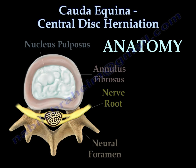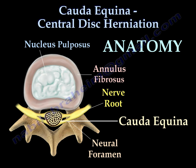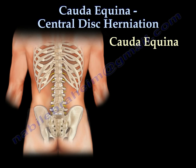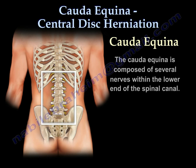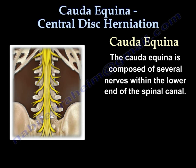Here you can see the anatomy showing the bony vertebra and the disc. The disc is composed of two parts: inside, the nucleus pulposus, and outside, the annulus fibrosus. You can see the nerve root and you can see the cauda equina — multiple nerve roots.